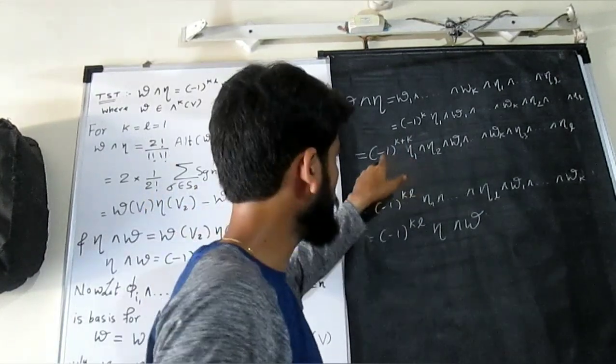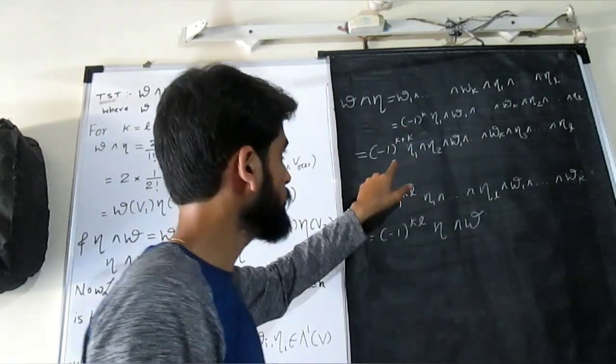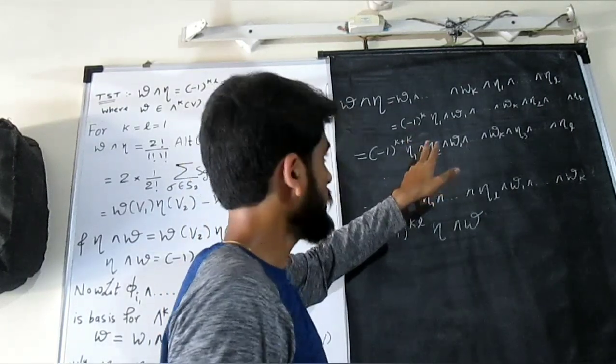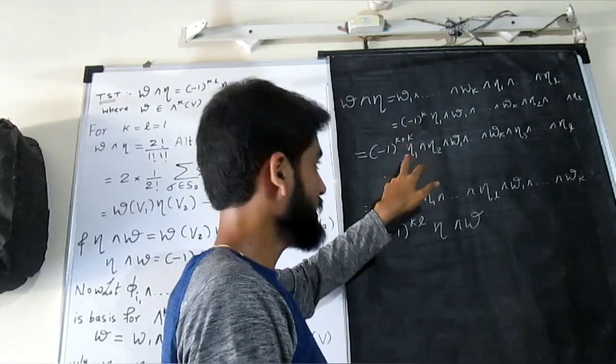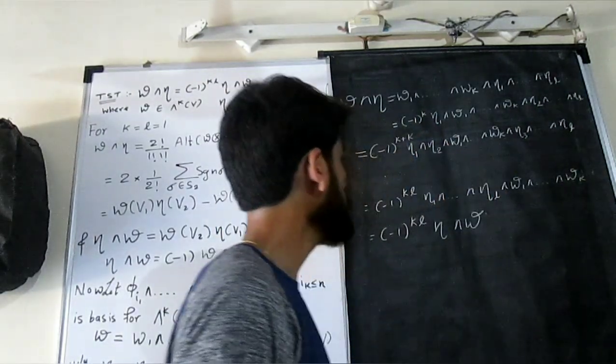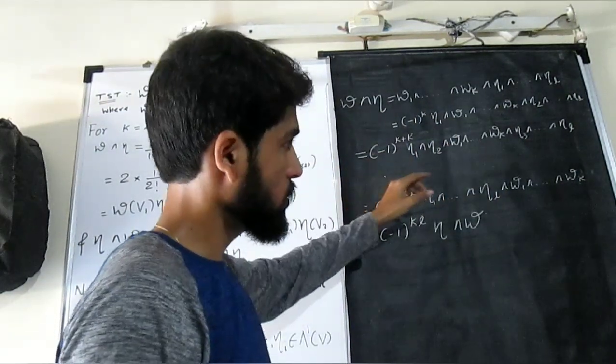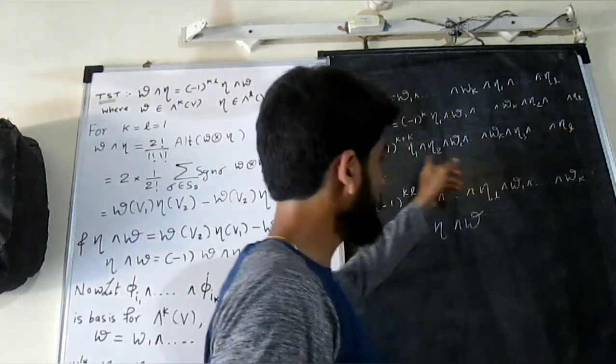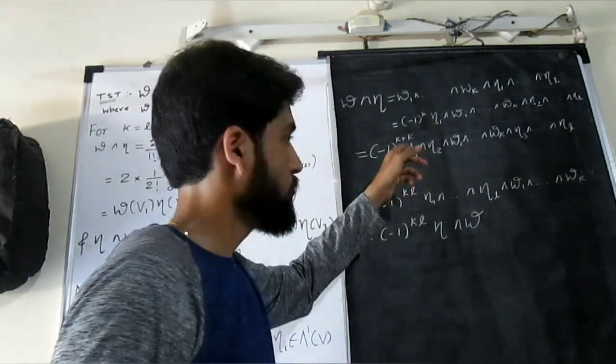So I got minus 1 raised to k plus k, that is 2k, omega 1 wedge product with, oh sorry, eta 1 wedge product with eta 2 wedge product with omega 1, and then so on. If we continue this process, what we are going to do, we are going to take each of this etas first and each of the omega at the end.